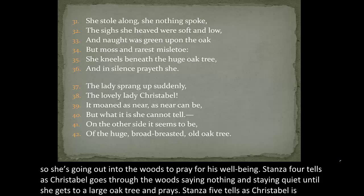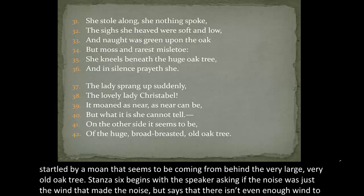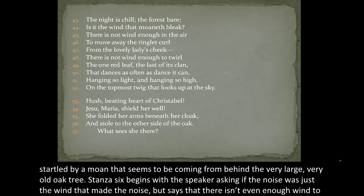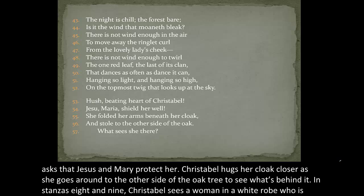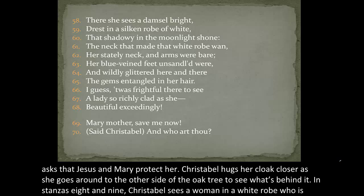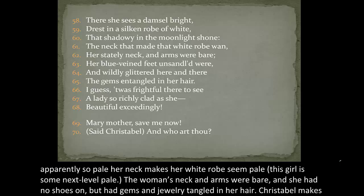Stanza four tells us Christabel goes through the woods saying nothing and staying quiet until she gets to a large oak tree and prays. Stanza five tells us Christabel is startled by a moan that seems to be coming from behind the very large, very old oak tree. Stanza six begins with the speaker asking if it was just the wind that made the noise, but says that there isn't even enough wind to blow Christabel's hair or make a leaf dance — another example of the call-and-response pattern. In stanza seven, the speaker tells Christabel to calm down and asks that Jesus and Mary protect her.